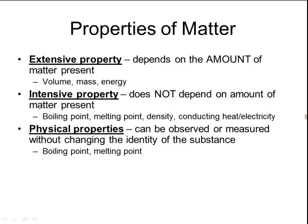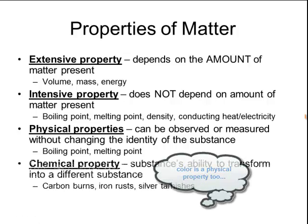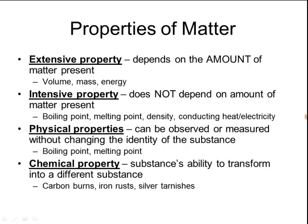Matter also has certain physical properties. Any physical property can be observed or measured without changing the identity of the substance — you can just look at it, put a thermometer in it, or measure it with a ruler without changing what it is. Boiling point and melting point are examples of physical properties. A chemical property, on the other hand, is the substance's ability to transform into a different substance. Carbon will burn, iron has a tendency to rust, and silver will tarnish — those are all different chemical properties.